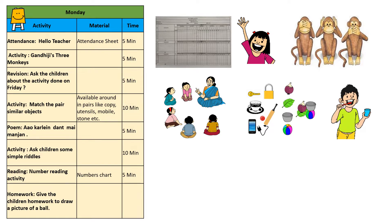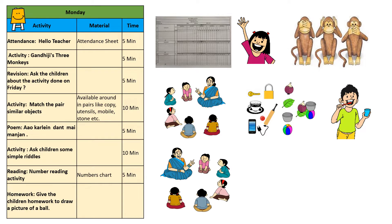Poem: sing and dance to the 'Aa kare datne manjan' song with the children. Riddles: ask children some simple riddles, like 'I am green in color, my beak is red — who am I?' Continue asking children different riddles on fruits, vegetables, animals, and birds.